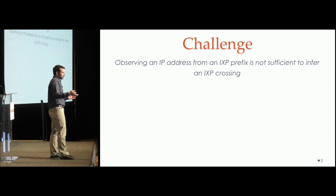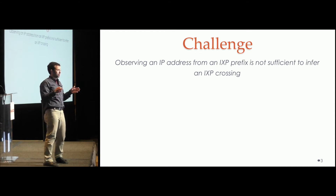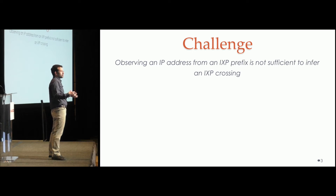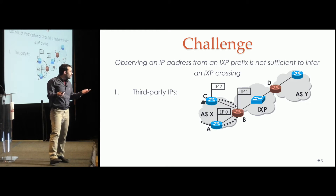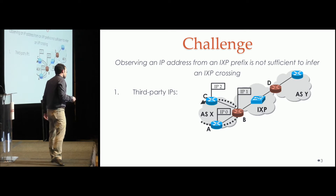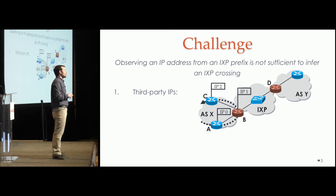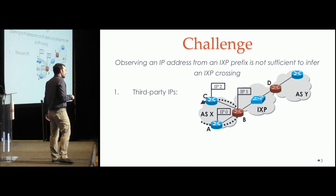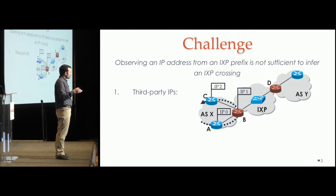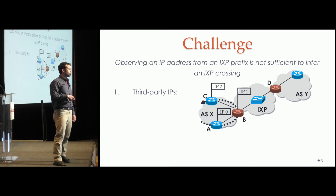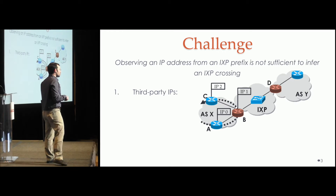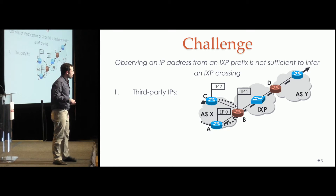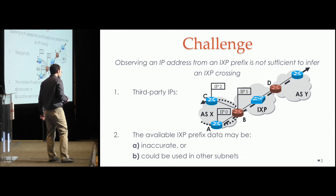Unfortunately, based on the literature, we cannot be pretty sure that we have crossed an IXP by stumbling on an IXP IP in the Traceroute path and having IXP prefix information in hand. This could happen due to different reasons — for instance, due to third-party IPs. Assume a layer-2 IXP topology with two IXP members at the borders, and the Traceroute path crosses border router B. If this border router B replies with a third-party IP belonging to the IXP subnet, it's possible to falsely infer that we crossed the IXP fabric, but in fact we didn't, as you can notice with a dashed line.